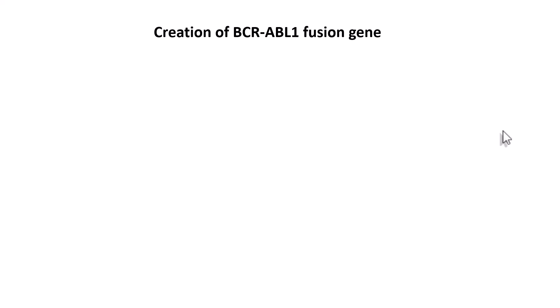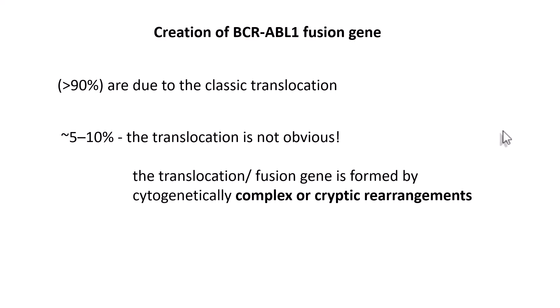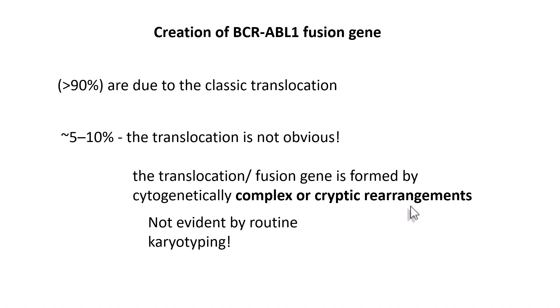The BCR-ABL1 fusion takes place due to classic reciprocal translocation in 90% of cases. In around 5 to 10% of cases, though there is translocation, it is not obvious because the fusion gene is formed by cytogenetically complex rearrangements, also called cryptic rearrangements. These are not routinely evident by karyotyping, and therefore to identify the BCR-ABL1 fusion gene you need to perform fluorescent in-situ hybridization (FISH) or polymerase chain reaction (PCR) tests.